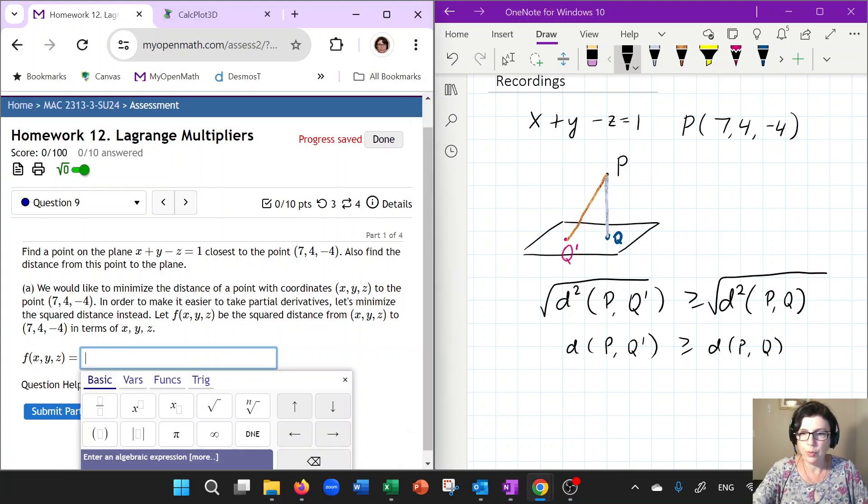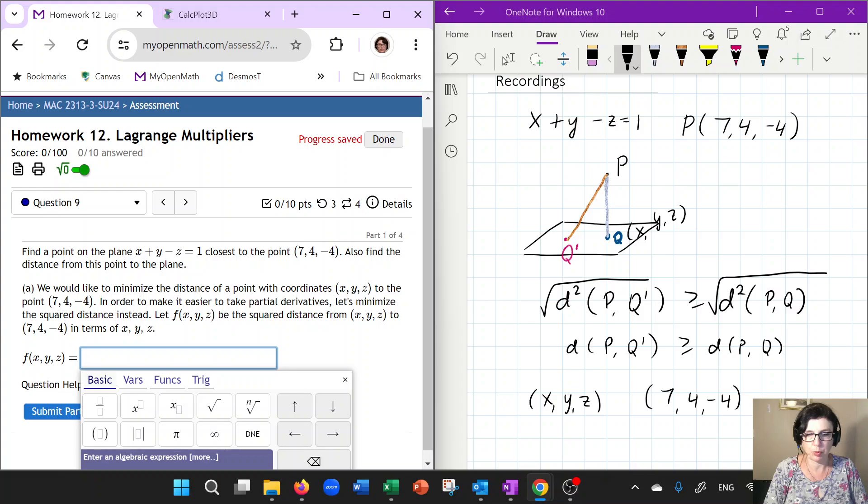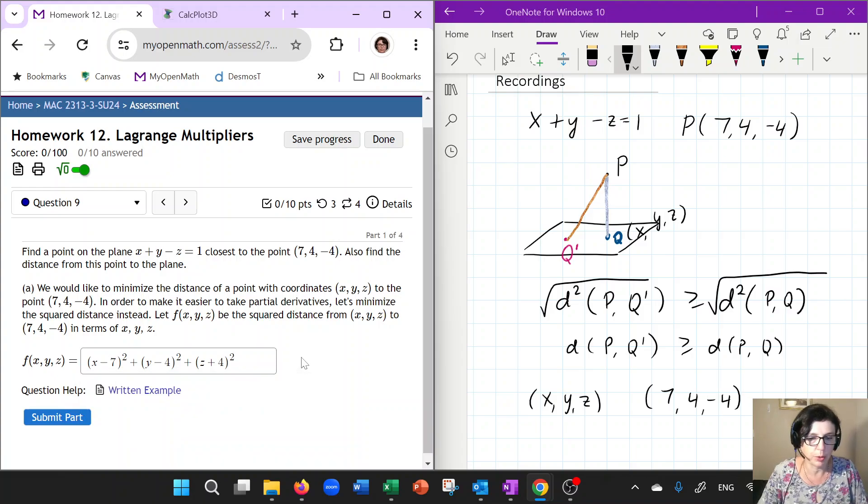So how do we find, imagine that Q has some coordinates X, Y, and Z. How do we find the square distance from a point X, Y, Z to a point 7, 4, negative 4? Now, for that, we need the distance formula. So the way this looks like, you just subtracting the coordinates, you square them, and then you add up the results. And again, we don't take the square root because it doesn't matter. It just introduces additional difficulty that we do not want.